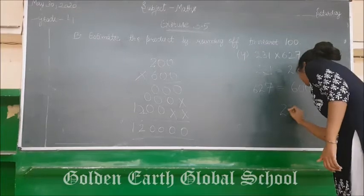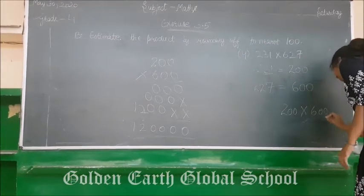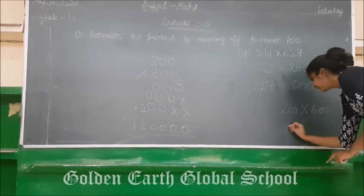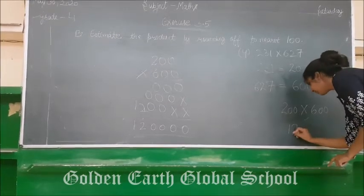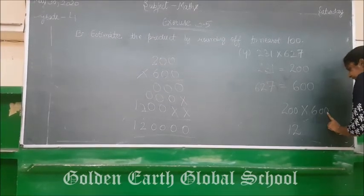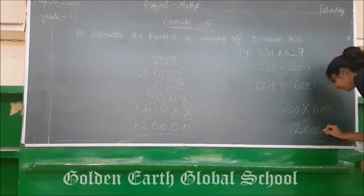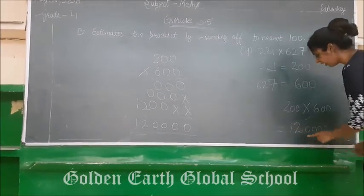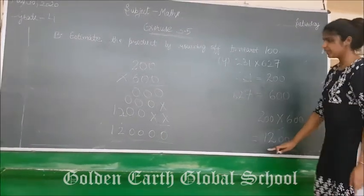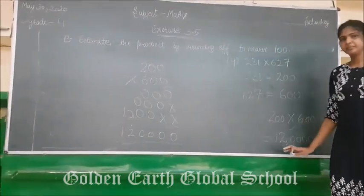Using the simple method: 200 × 600 — multiply 2 by 6 to get 12, then count the zeros: 1, 2, 3, 4 from both numbers. So the final answer is 120,000. You can solve by the long method or this short method. Clear everyone?